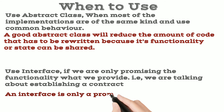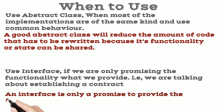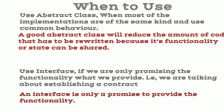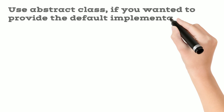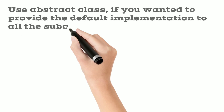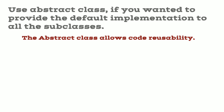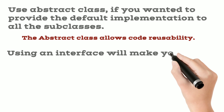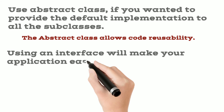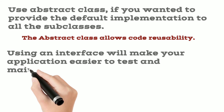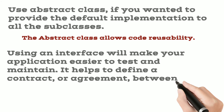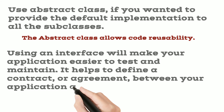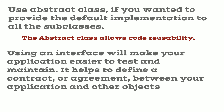An interface is only a promise to provide the functionality. Use an abstract class if you want to provide the default implementation to all the subclasses. Using an interface will make your application easier to test and maintain. It helps to define a contract, or agreement, between your application and other objects.